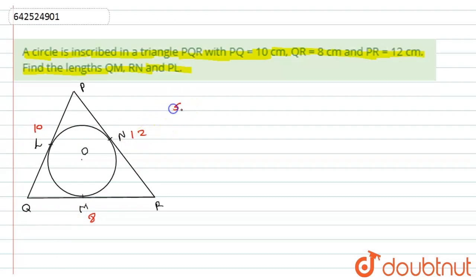As we know that the tangent drawn from external point onto the circle are equal, hence can I consider the QL and QM as X? Similarly, can I consider the RN and RM as Y? And similarly, I will consider the PL and PN as Z.